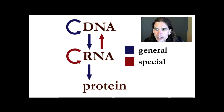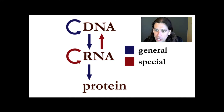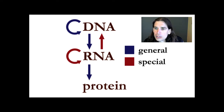I like to begin these lectures thinking about and talking about the central dogma of molecular biology, which is illustrated in this slide. This is really a story about information flow in biological systems. The main ways that information flows in a biological system is through the processes of replication, transcription, and translation.